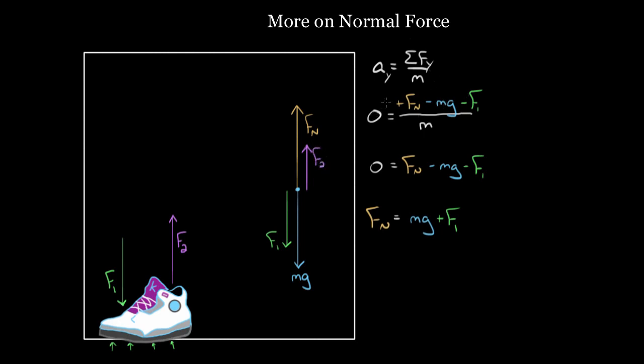Over here, how would this change? Again, still acceleration is zero, but I'd have an upward force now. So I'd have to add F2 vertically because that's another force. I'd have a plus F2 right here. And then over here, when I solve for this, I add mg to both sides. I add F1 to both sides, and then I have to subtract F2 from both sides. So now I'd have Fn is mg plus F1 minus F2.